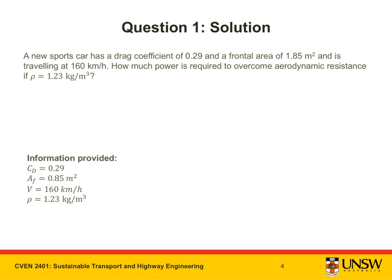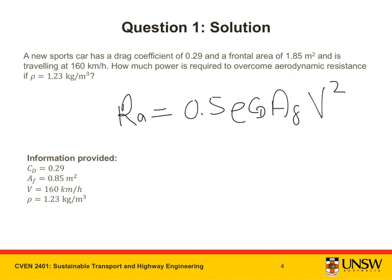Let's take a closer look at the information provided. We can extract the parameters required for the RA equation: RA = 0.5 × rho × CD × AF × V². CD represents the drag coefficient — it is a function of vehicle type and operational factors, and its units are dimensionless. AF represents the projected frontal area of the car; it is a function of vehicle size and its units are in metres squared.